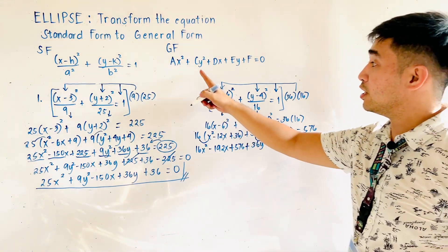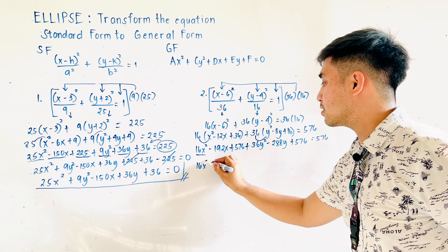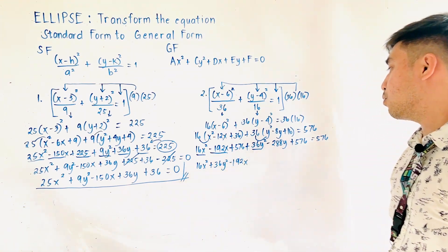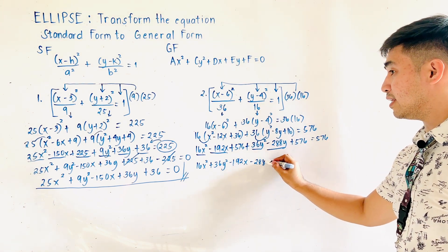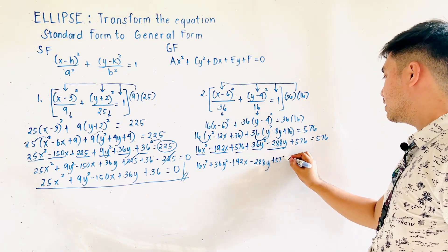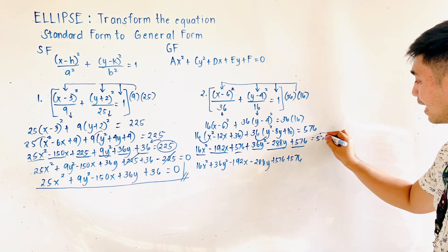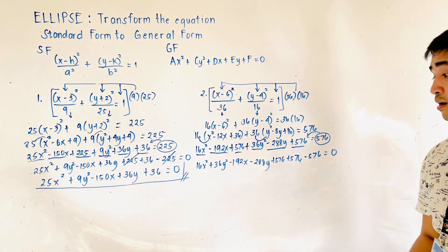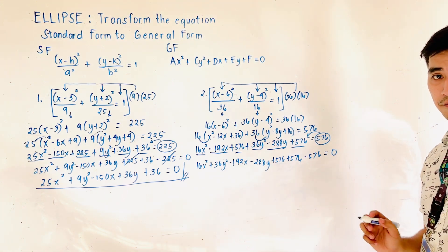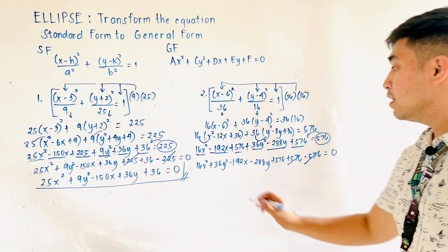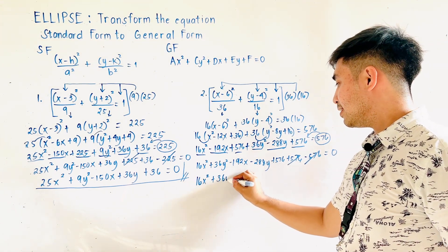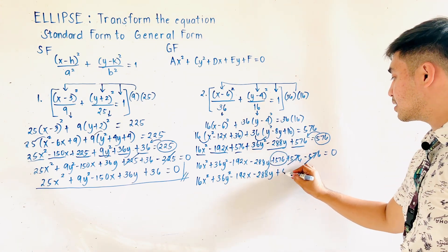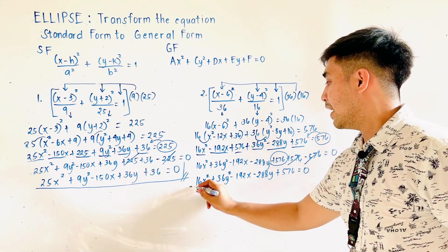Let us arrange into general form. We have 16x² plus 36y² minus 192x minus 288y. The constants are plus 576 plus 576, and we transfer the right-side 576 to the left as negative 576, equal to 0. Positive 576 and negative 576 cancel out. Therefore, the general form is 16x² + 36y² − 192x − 288y + 576 = 0. That is the final answer.